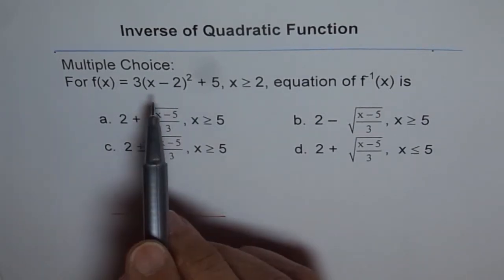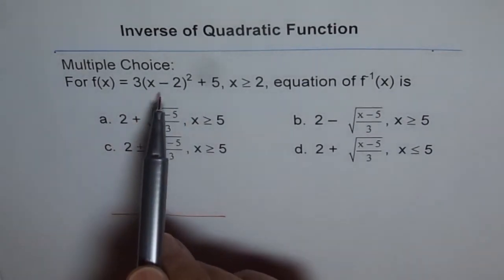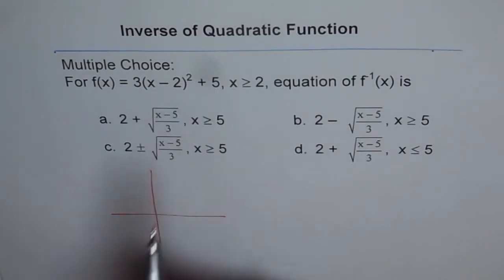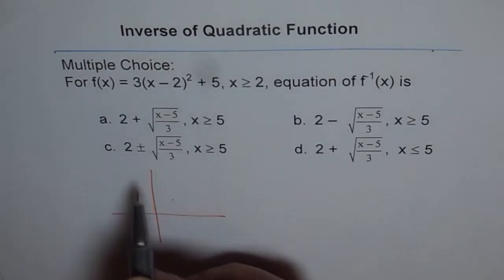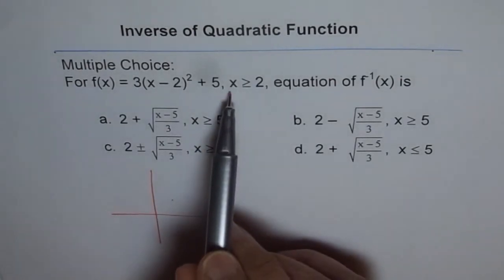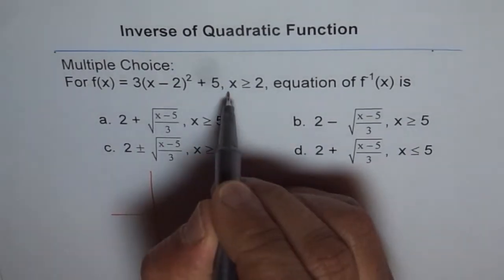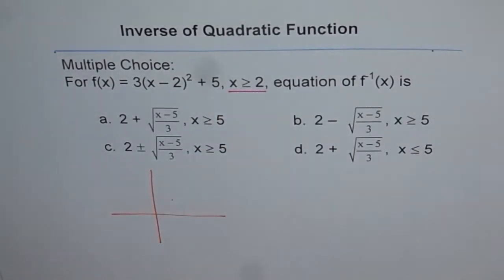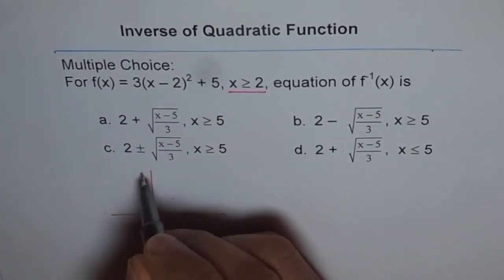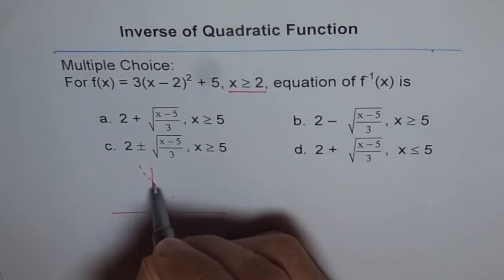Anyway, we'll sketch this. Here we have a vertex at (2, 5). So let's say the vertex is kind of here, and the function opens upwards, and we are interested in domain of x greater than or equal to 2. This is a very important statement here.